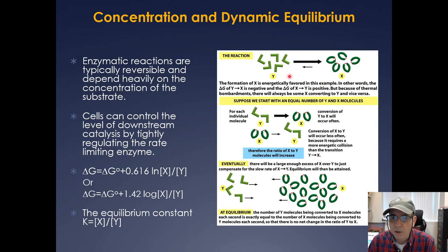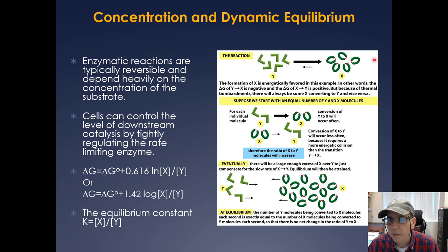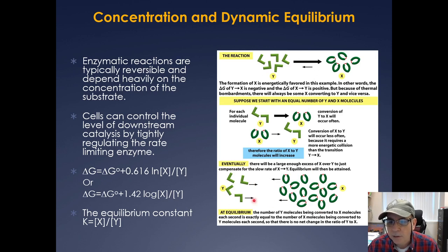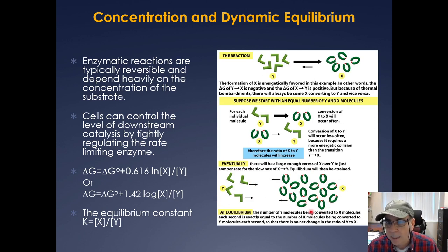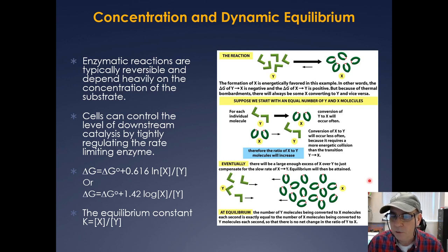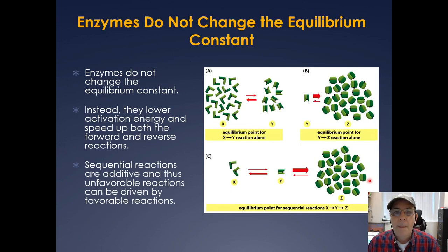Controlling the amount of product and reactant will control the reactions. Y to X is favorable; X to Y is not favorable. When you have a lot of X, you eventually reach equilibrium where fewer Y's are driven to X. The rate at which Y goes to X equals the rate at which X goes to Y even when there is much more X present. This becomes very important in certain chemical reactions in central metabolism.